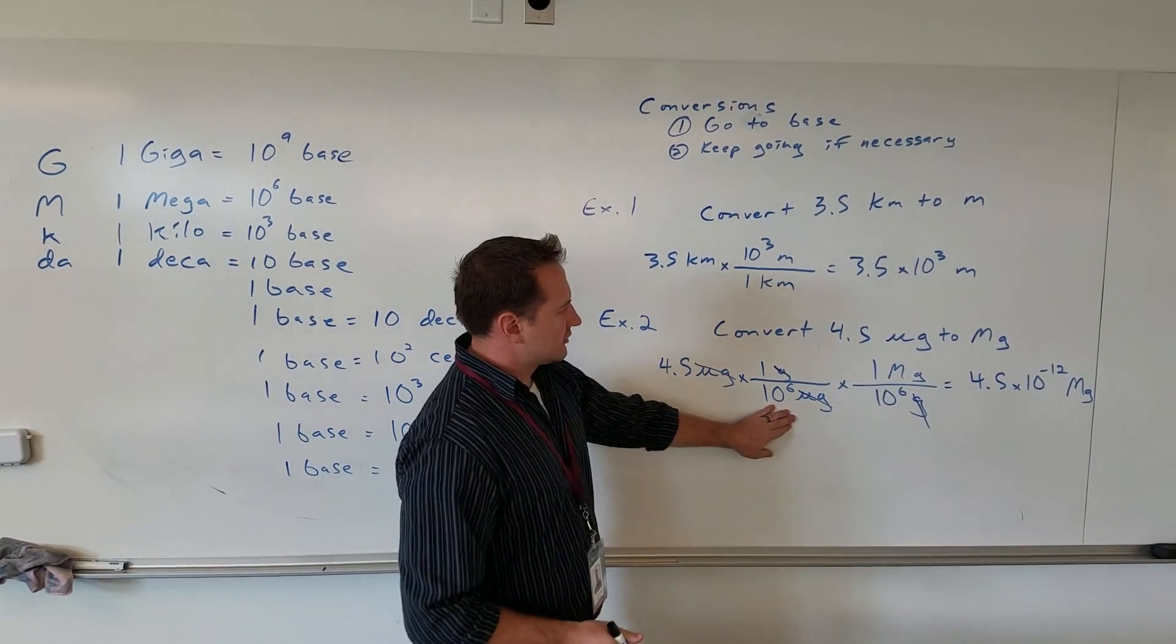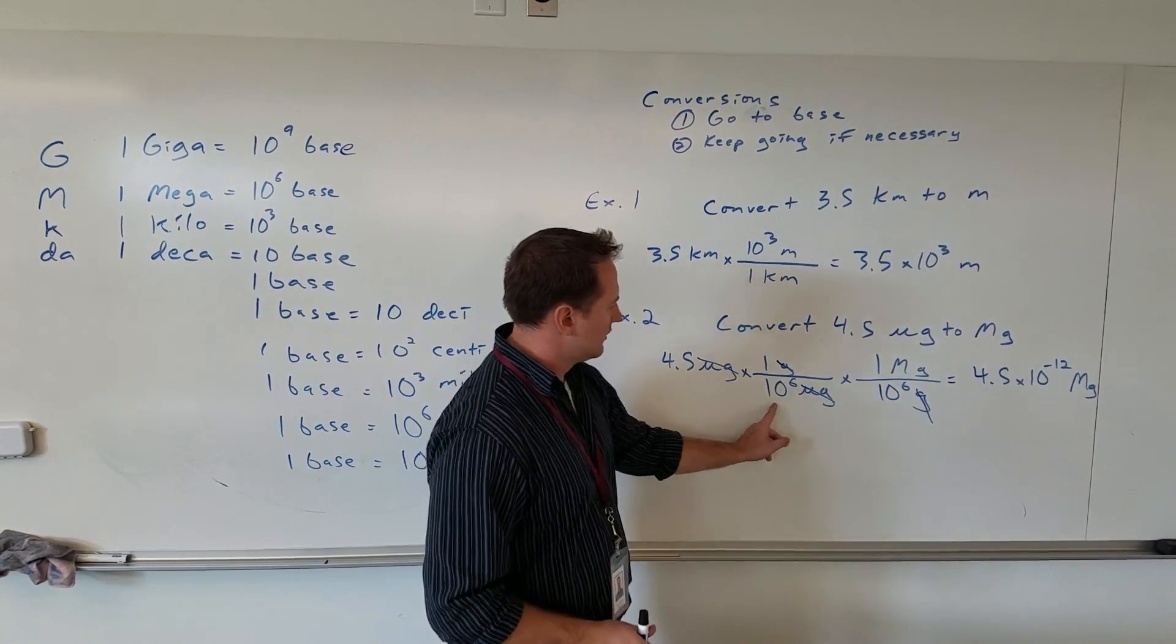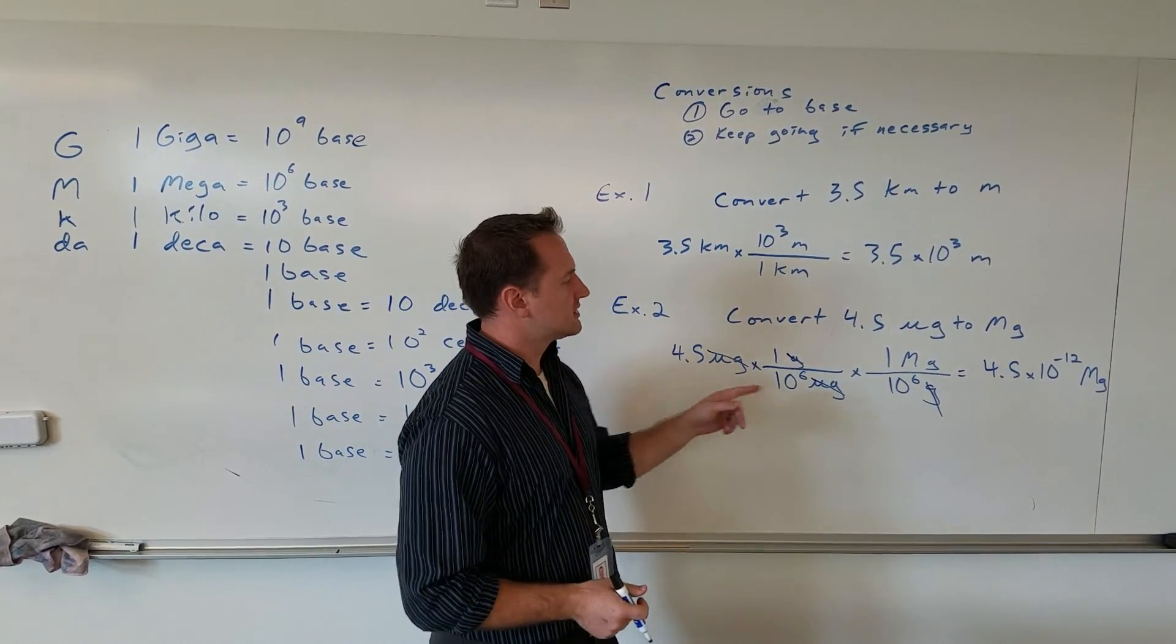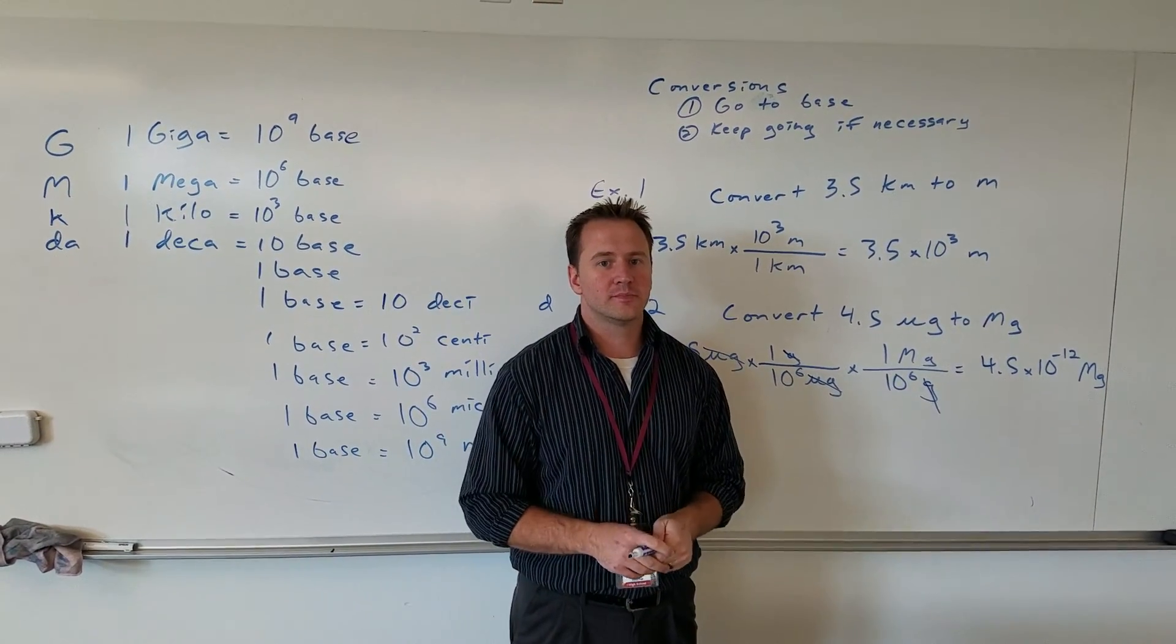Whenever you're dividing by a factor of 10, it basically becomes a negative exponent. 4.5 would be 10 to the 12th in the denominator. When we move it up to the numerator, it becomes 10 to the negative 12th. This is how we convert within the metric system. Use it.